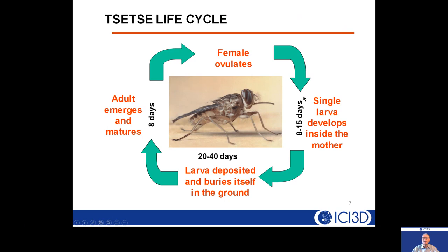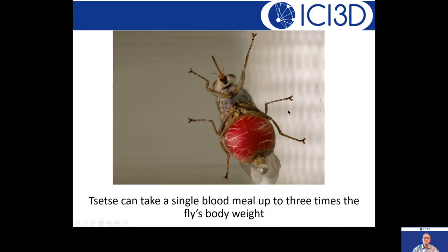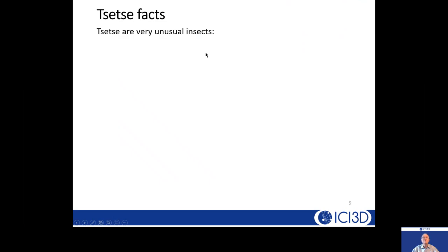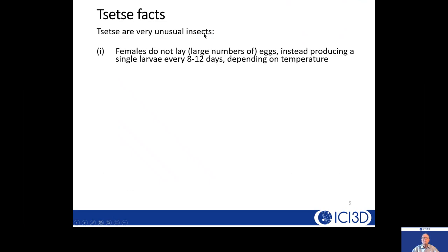A single larva develops inside the mother. The larva gets deposited on the ground, buries itself, and stays under the ground for 20 to 40 days depending on temperature. It then emerges, and about eight days later it ovulates, completing the life cycle. Tsetse flies live on blood — blood and only blood. A single blood meal can weigh three times the fly's body weight.